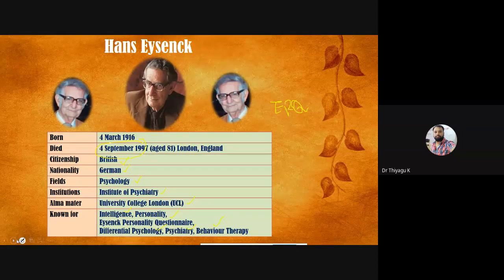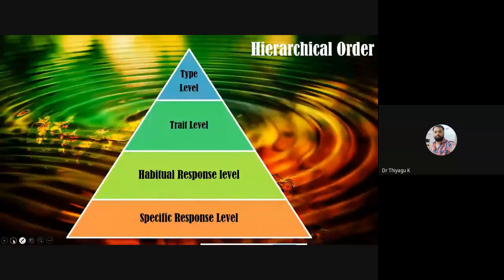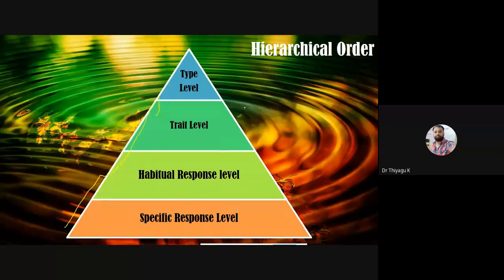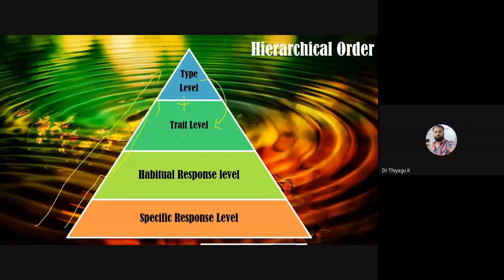Moving to the theory part — Eysenck emphasizes a hierarchical approach for dealing with personality. You can understand this hierarchical order from an image, somewhat comparable to Maslow's hierarchy, though it is different. We go from low to high. The type level is the highest order, then the trait level. Because there is a combination between the type and trait, it is called the type-come-trait approach.